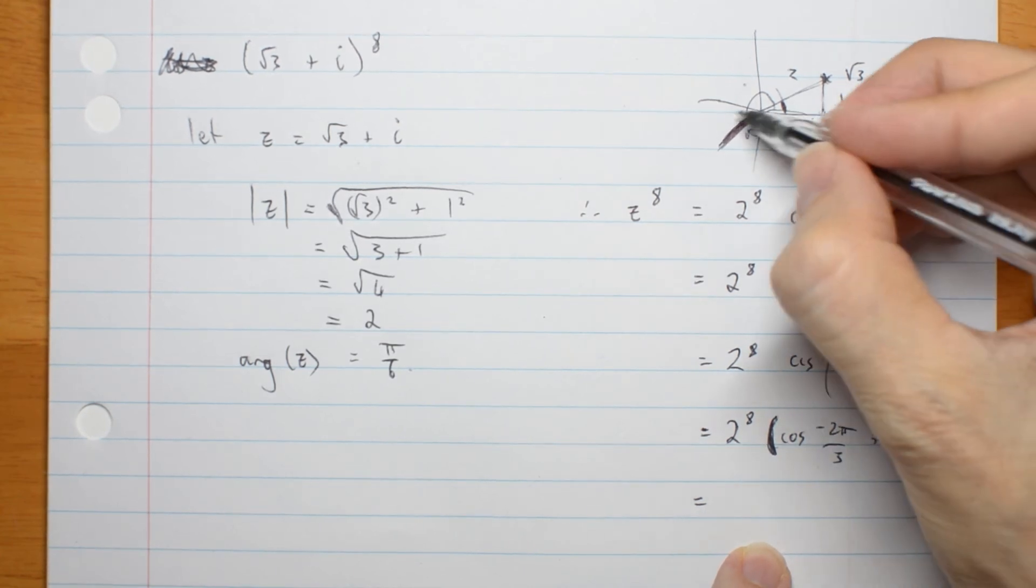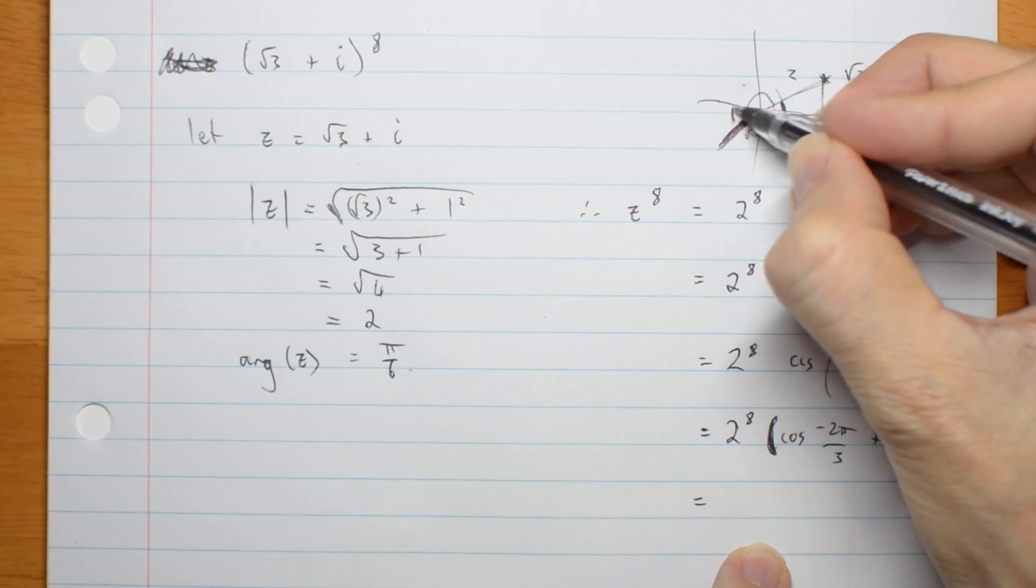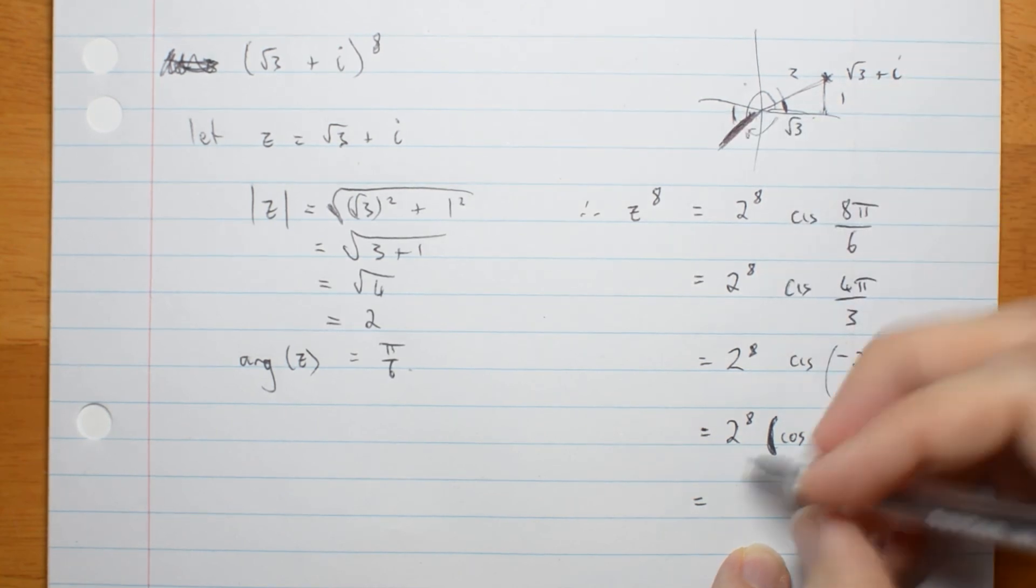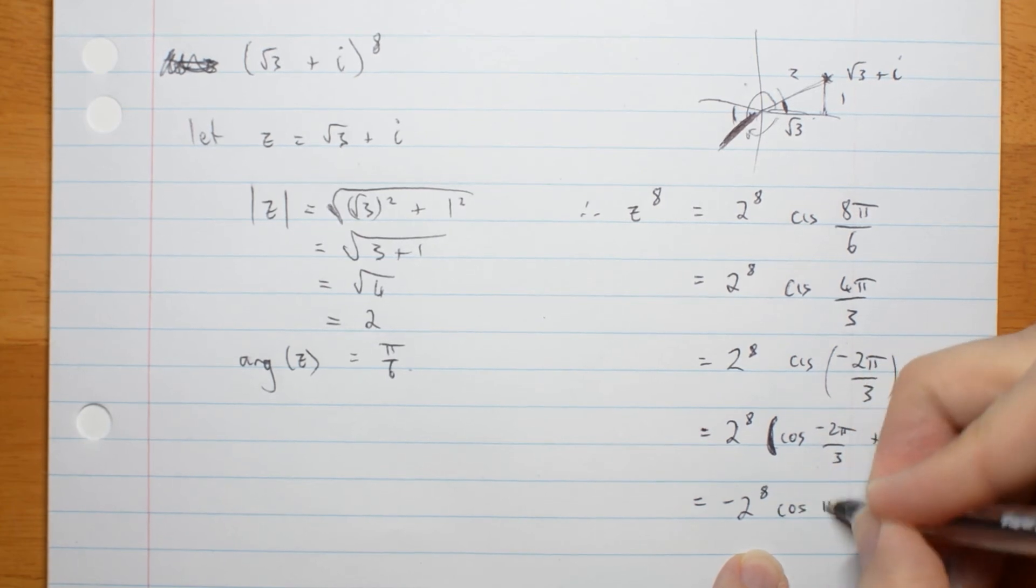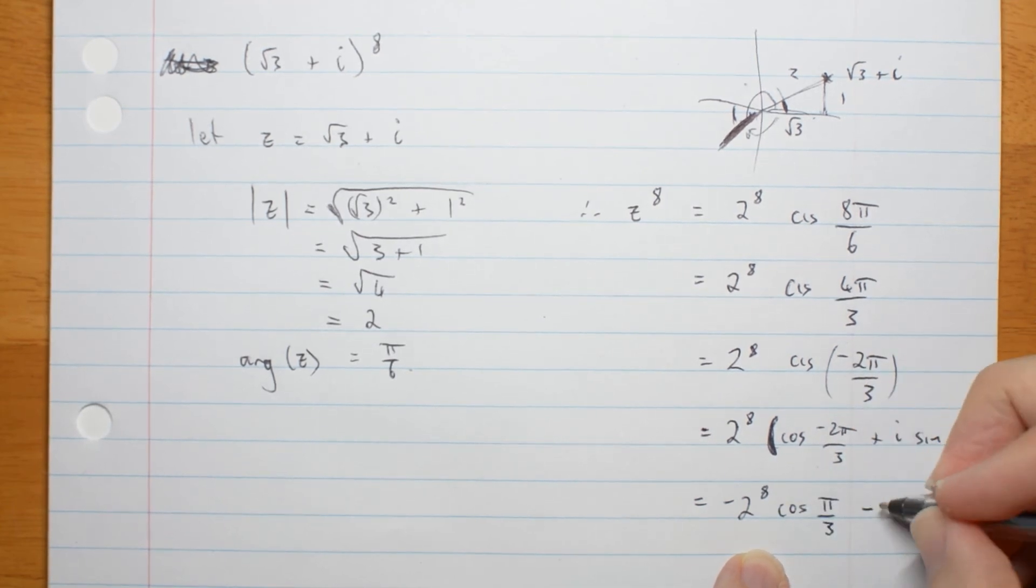But what are those angles? Well, the reference angle here is pi on 3. So this is minus 2 to the 8 cos pi on 3 minus 2 to the 8 i sine pi on 3. And I've included my negatives where I know they have to go.